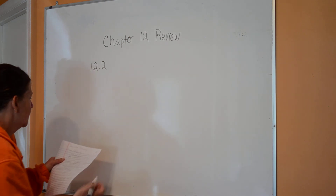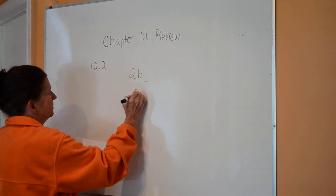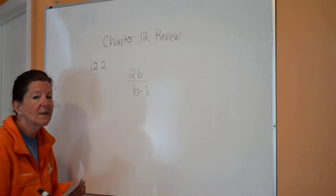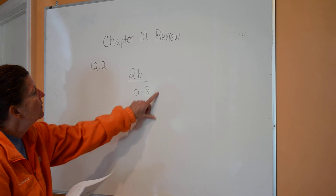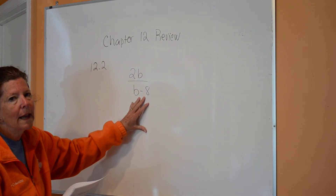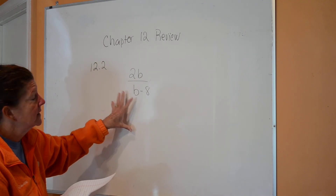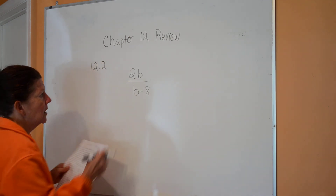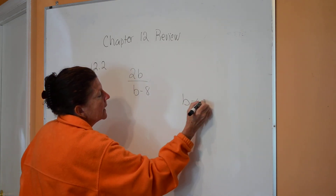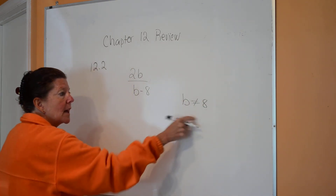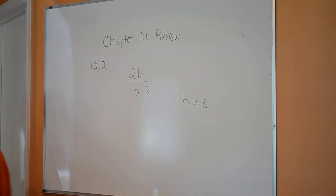We talked about excluded values. If you've got a fraction and I ask what's the excluded value, remember the excluded value is whatever makes the denominator equal to zero, because I cannot have zero on the bottom of a fraction. On this one, B cannot equal 8, so that's the excluded number.